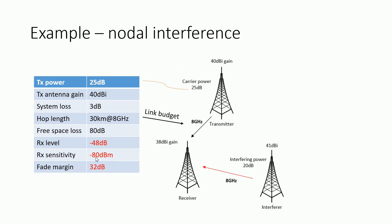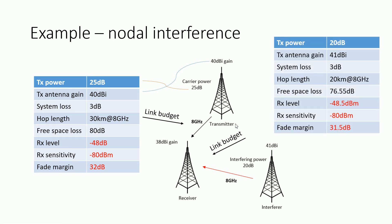We also calculate a link budget for the other link. We need to establish the received level at station B from the interfering station. The transmitting power is 20 dBm at a gain of 41 dBi. We calculate the receive level from each station and also compute the fade margin for this link.